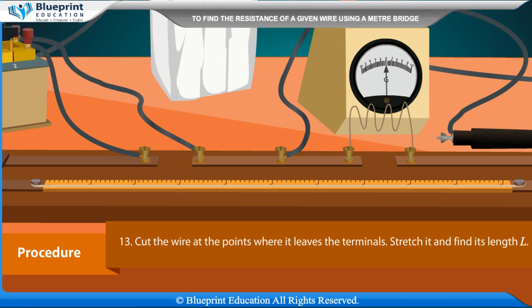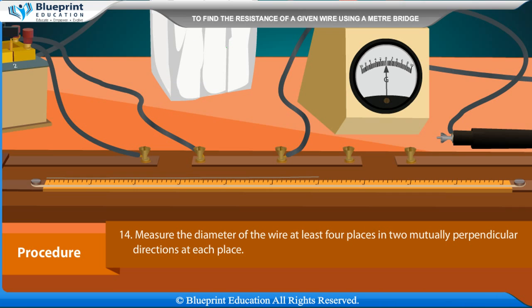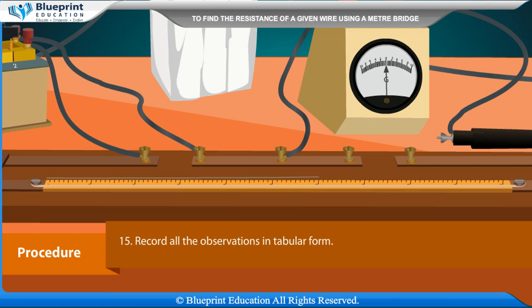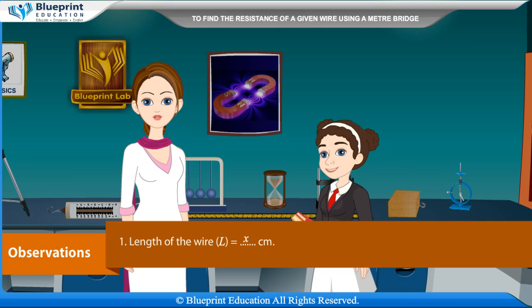Take at least 4 observations by changing the value of R and repeating the steps. Cut the wire at the points where it leaves the terminals, stretch it, and find its length L. Measure the diameter of the wire at least 4 places in two mutually perpendicular directions at each place. Record all observations in tabular form.